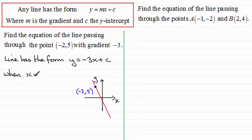So we'll just say here, when x equals minus two, y equals five. And if we substitute these values into here, we're therefore going to have for y, five equals minus three times x, which is minus two plus c.